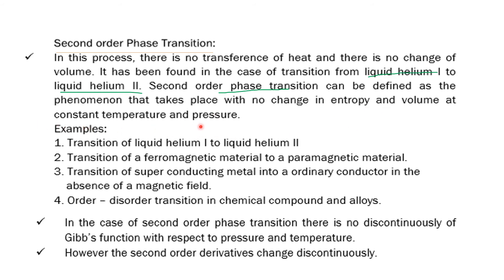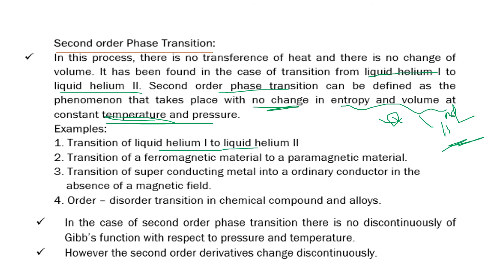It occurs at constant temperature and pressure. That means entropy and volume do not change — they remain constant. Examples include the transition of liquid helium 1 to liquid helium 2.